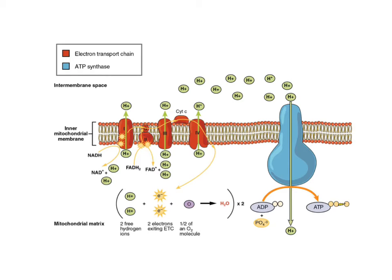Here's a simplified version of that. This is the cristae membrane — the inner mitochondrial membrane. A number of different cytochromes are embedded in the membrane, passing electrons along. For every electron passed along, hydrogen ions pass through and build up in the inner membrane space — the space between the inner and outer membrane. They can only pass back through at ATP synthase. As they do, they catalyze the reaction of ADP adding a phosphate group to form ATP. At the end, oxygen is again the final electron acceptor, allowing the whole process to continue.